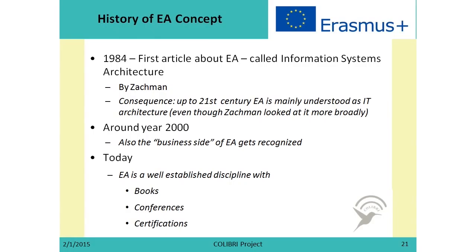The first time the term Enterprise Architecture appeared was around 1984, when Zachman came up with information systems architecture. By the 21st century, enterprise architecture was mainly understood as IT architecture, even though Zachman looked at it more broadly. Only around the year 2000 did the business side of enterprise architecture get recognized, and people started to develop these models in more detail and with more enthusiasm.